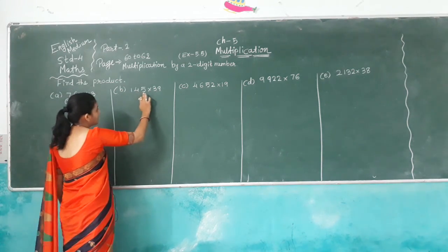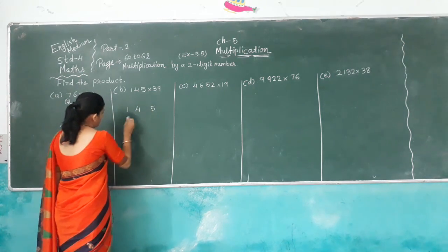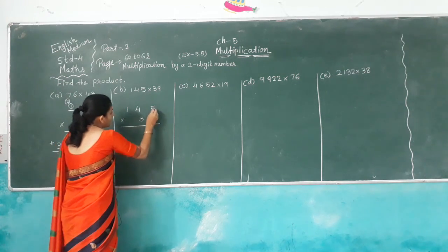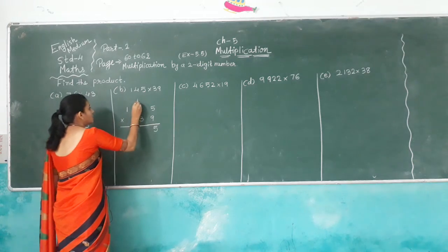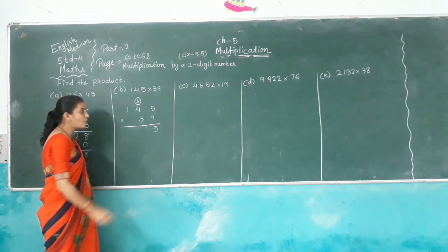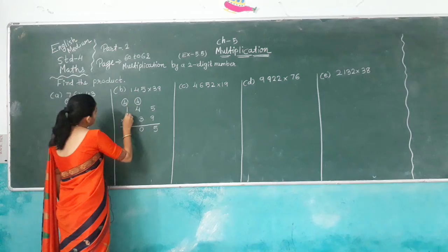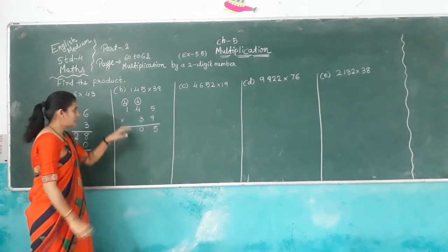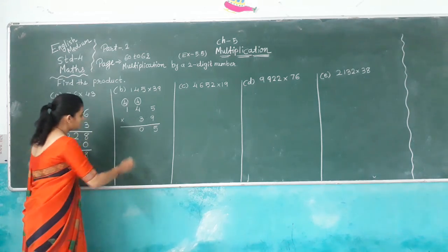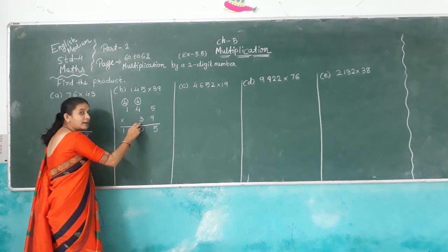Next one: 165 multiplied by 39. 9 times 5 is 45, carry over 4. 9 times 6 is 54, plus 4 is 58 — wait, 9 times 4 is 36, 36 plus 4 is 40, carry 4. 9 times 1 is 9, 9 plus 4 is 13. So we get answer 13 here. Now we count the tens place.